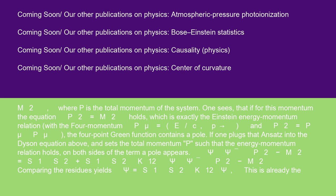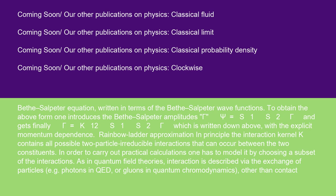If one plugs that ansatz into the Dyson equation above and sets the total momentum P such that the energy momentum relation holds, on both sides of the term a pole appears. Psi psi/(P2 minus M2) equals S1S2 plus S1S2K12 psi psi/(P2 minus M2), comparing the residues yield psi equals S1S2K12 psi. This is already the Bethe-Salpeter equation written in terms of the Bethe-Salpeter wave functions.